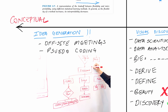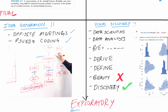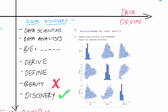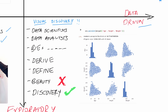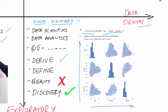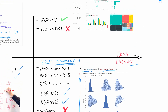The next quadrant is 'idea generation' — used in offsite meetings and whiteboarding sessions. You sketch plans, budgets, and dashboards. Then there's 'visual discovery,' where data scientists and analysts are hired. Here you use something like a Seaborn library in Python — showing three-by-three variable interpretability, like how height varies with weight via a scatter plot. In this quadrant, you're not focused on beauty; your goal is to derive insights, define objectives, and discover trends.